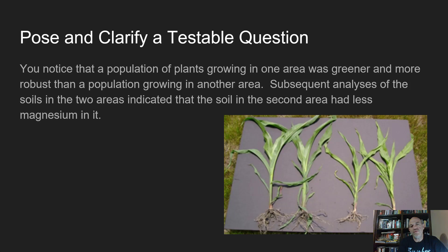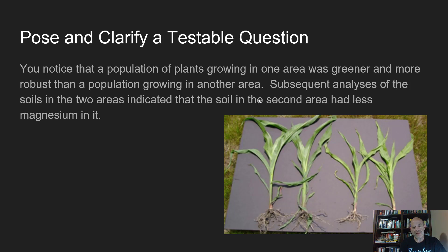In this video we are going to look at how we analyze data within the context of a controlled experiment. In the prior video we were talking about designing an experiment to test the effects of magnesium level on the growth of corn plants like the ones you see in this picture. When you're going to test this idea in a controlled experiment, you're going to need to repeat that test.